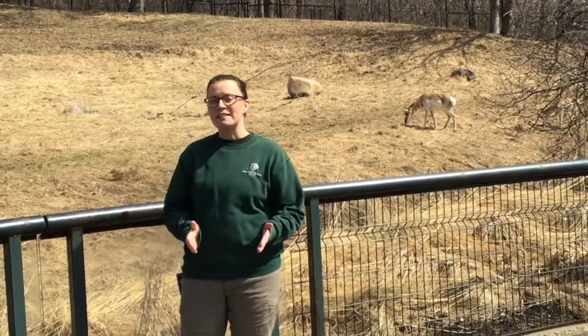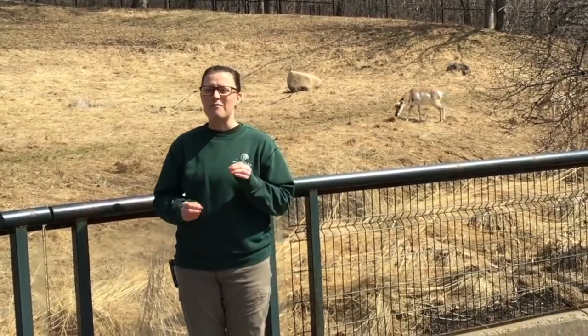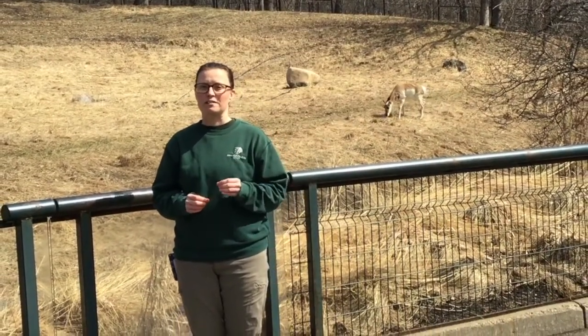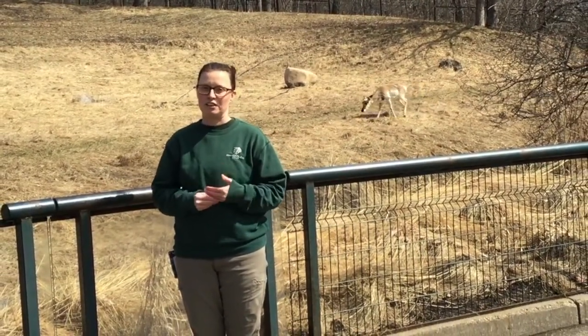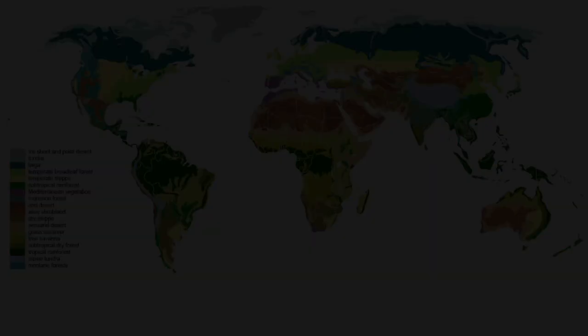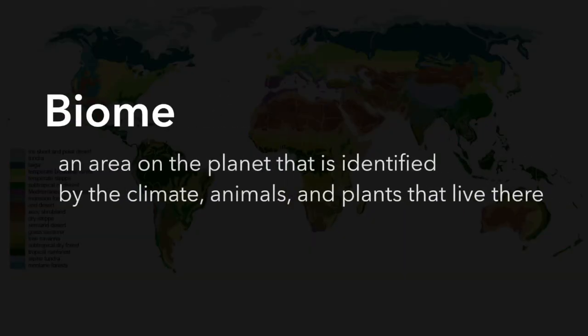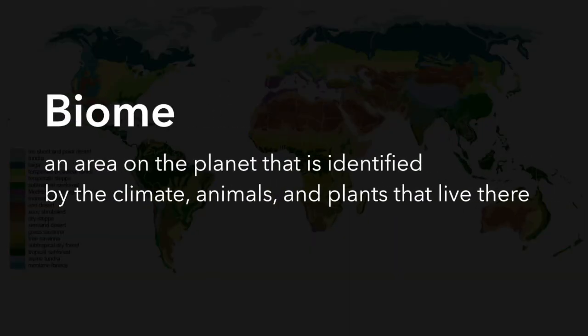Before we get started, there are a few important words that we need to learn. The first word we're going to discuss is biome. A biome is defined as an area on the planet that is identified by the climate, animals, and plants that live there.